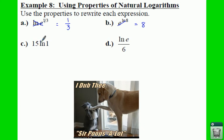Now in this case you have a 15 times natural log of 1. Well we know that the natural log of 1 is equal to 0. So if we take 15 times 0, that is just going to give us 0.